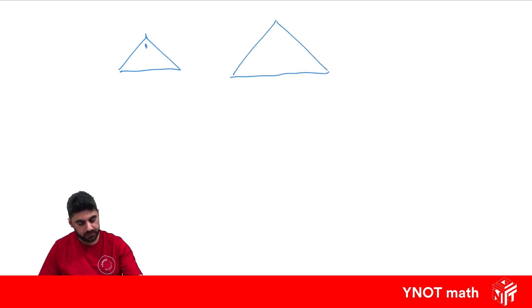If we know this angle equals this angle, this angle equals this angle, and this angle equals this angle, we also know the triangles are similar, and we can say that they're equiangular, which means all three angles are equal.